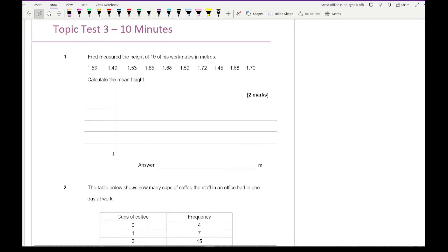Looking at question one, it says Fred measured the height of 10 of his workmates in meters. Calculate the mean height. So for this, what we need to do is simply add up all the 10 numbers. If I add all of those 10 numbers up, which again I'd probably say this would be on a calculator, we should have a total height of 16.02.